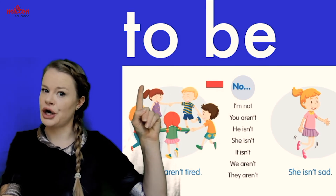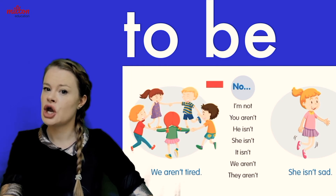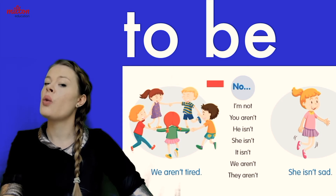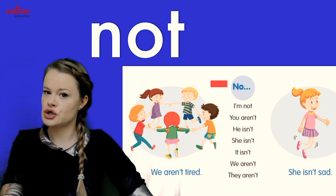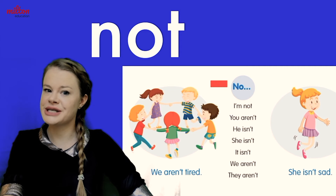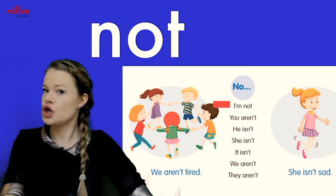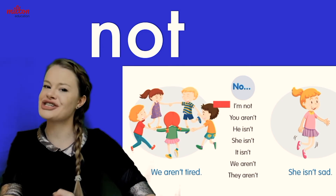Here we have the verb 'to be,' but look — here we have the word 'no.' Now, when we want to talk about what we don't feel, we need to use the word 'not.' Look, you can see it here — I'm not, I am not tired.